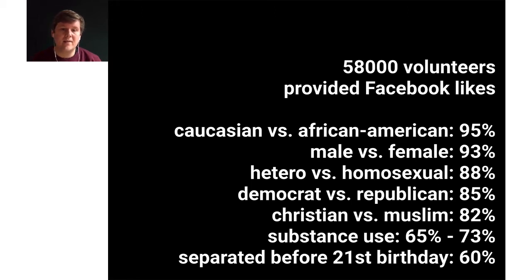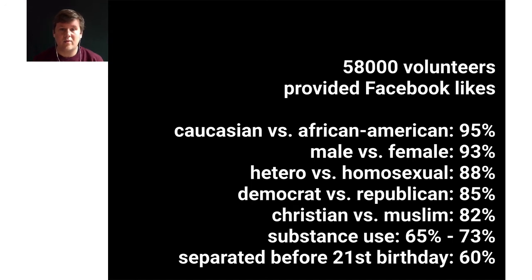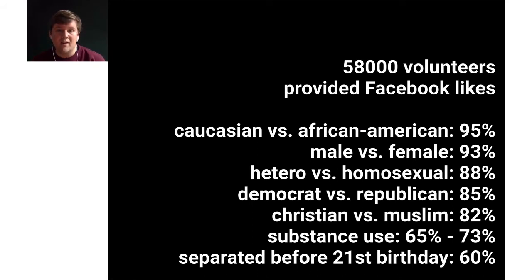Another example in the paper tries to predict whether a person's parents were separated before their 21st birthday, and here they achieve 60 percent accuracy. Just randomly guessing would give 50 percent — you flip a coin, so it's 50 percent if it's completely random. That means there's some indication in the data, but it might still be misleading. This is an important skill we have to learn: to get a feeling for when we're actually learning something versus when we're dealing with spurious correlations.